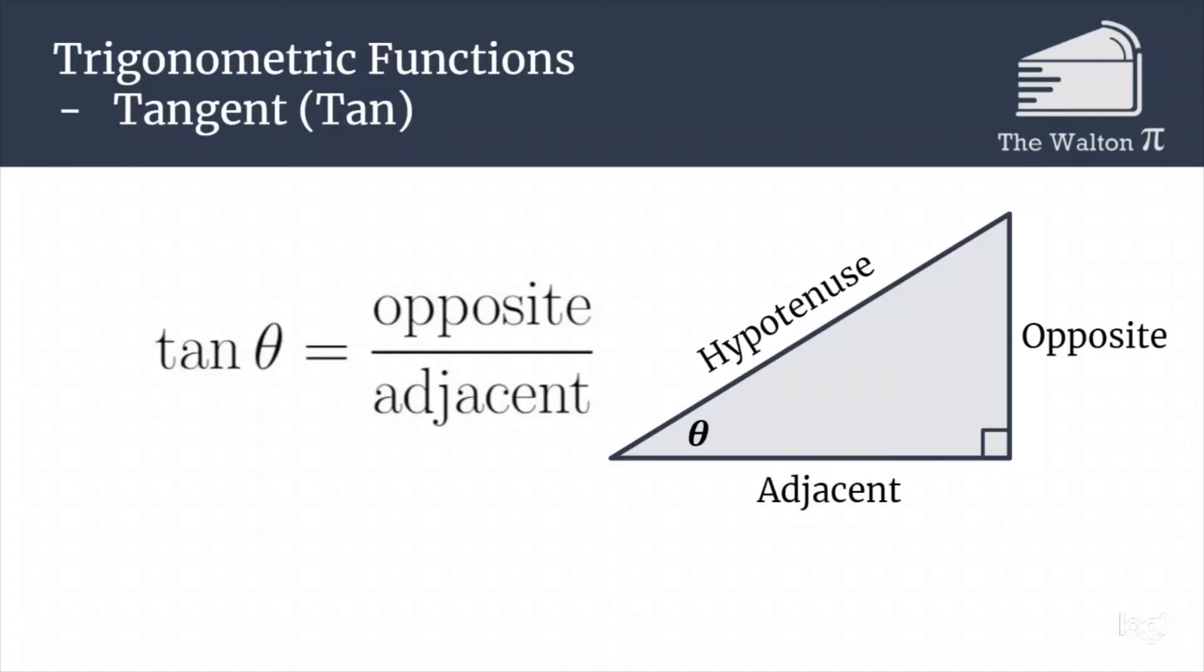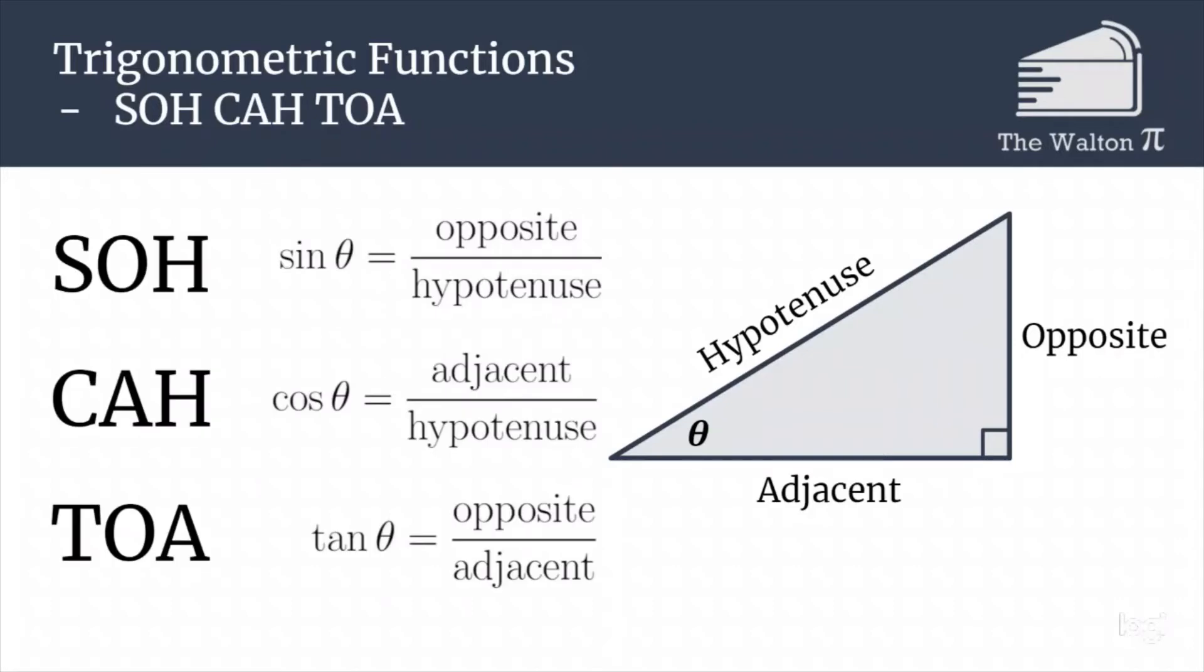You might have heard the acronym SOHCAHTOA. SOHCAHTOA is an acronym or mnemonic device to help remember these ratios. S for sine and OH stands for opposite over hypotenuse. CAH, C stands for cosine, and AH says it's adjacent over hypotenuse. TOA, tangent, tells us it's opposite over adjacent. These are helpful acronyms to remember what sine, cosine, and tangent are.